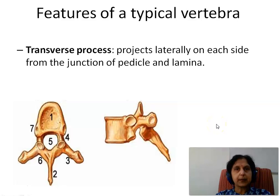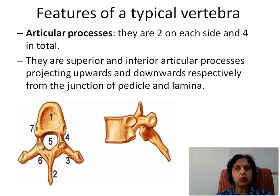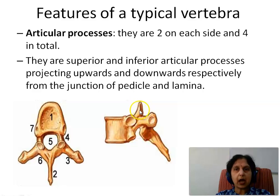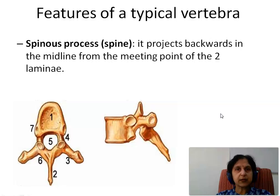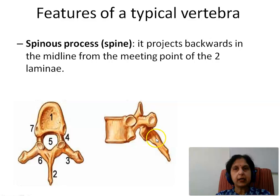The transverse process projects laterally on each side from the junction of the pedicle and the lamina. The articular processes are two on each side and four in total — the superior and inferior articular processes, which project upwards and downwards respectively from the junction of the pedicle and the laminae. The spinous process projects backwards in the midline from the meeting point of the two laminae, projecting downwards and backwards.